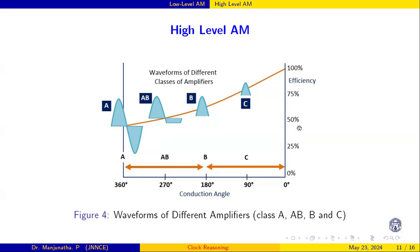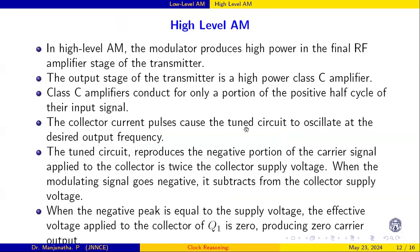Comparing all these, class C has the highest efficiency. It conducts only the positive half cycle, so the conduction angle is 180 degrees. This is about class A, class AB, class B, and class C. I am especially going to discuss class C because that is the amplifier used in the RF power amplifier for high-level AM.